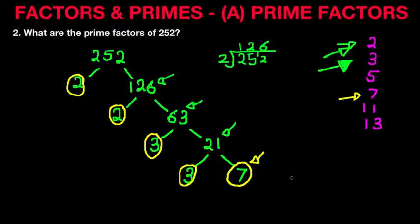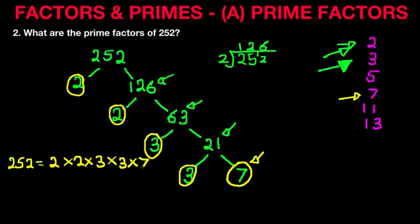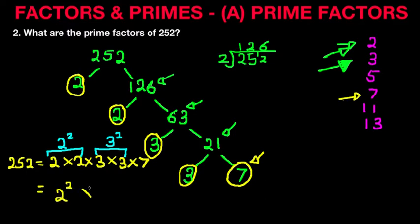So that's it — we have found all the prime factors of the number 252. Let's write them down: 252 equals all the ones we've circled: 2 times 2 times 3 times 3 times 7. Now we can simplify these: 2 times 2 we write as 2 to the power of 2, because there are 2 of them, and 3 times 3 we write as 3 to the power of 2. Therefore, 252 equals 2 to the power of 2 times 3 to the power of 2 times 7.